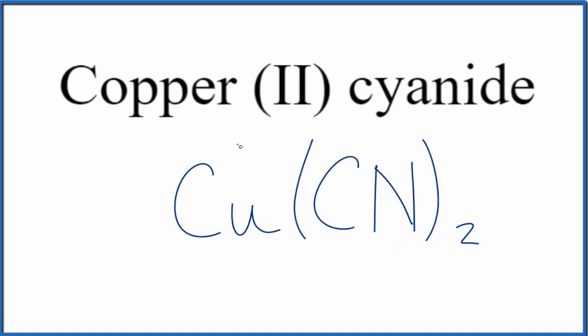And that makes this the formula for copper (II) cyanide. Cu(CN)2, with our cyanide ion here in parentheses.